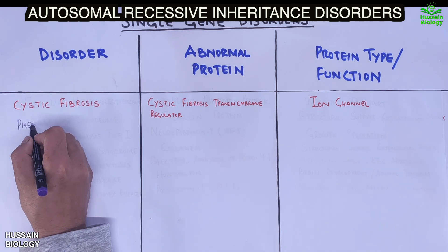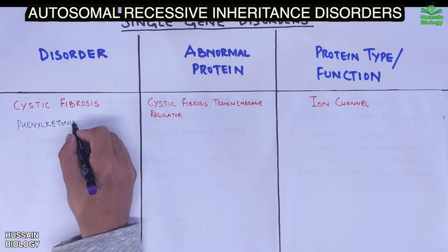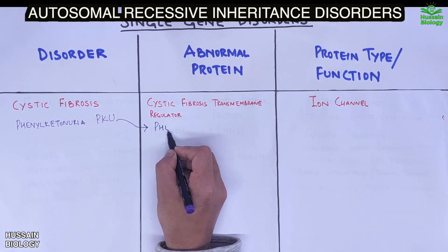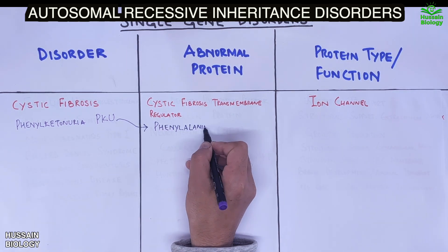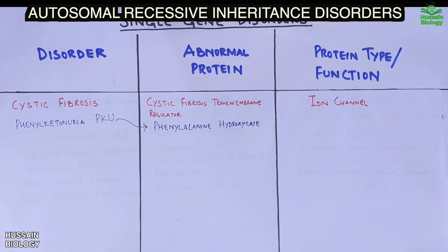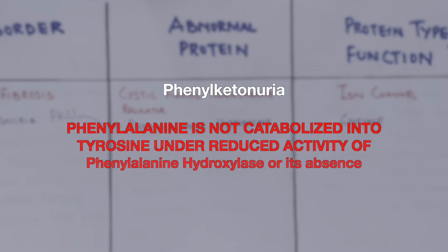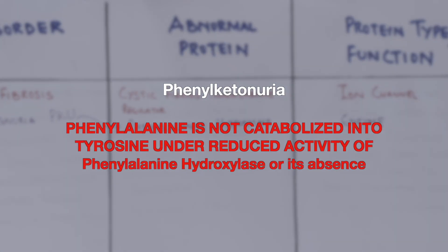The second autosomal recessive disorder is phenylketonuria (PKU), where the affected person has intellectual disability, behavioral problems, or mental disorder. It is due to the absence or abnormality of the enzyme phenylalanine hydroxylase, which under normal conditions catabolizes the amino acid phenylalanine.